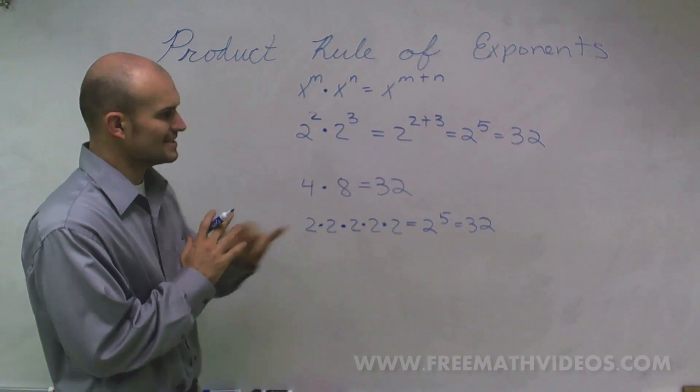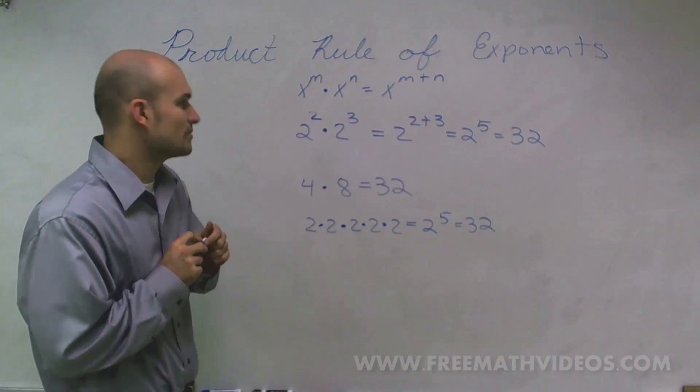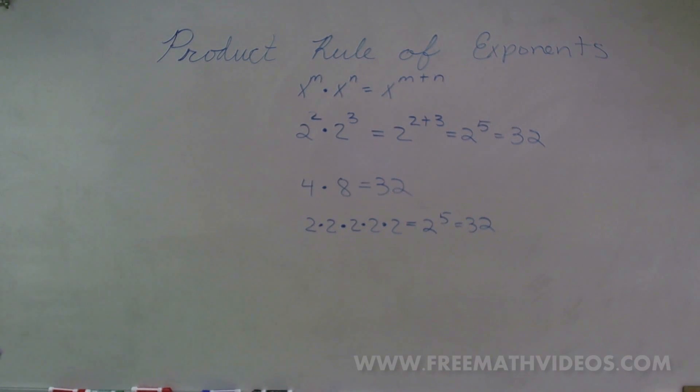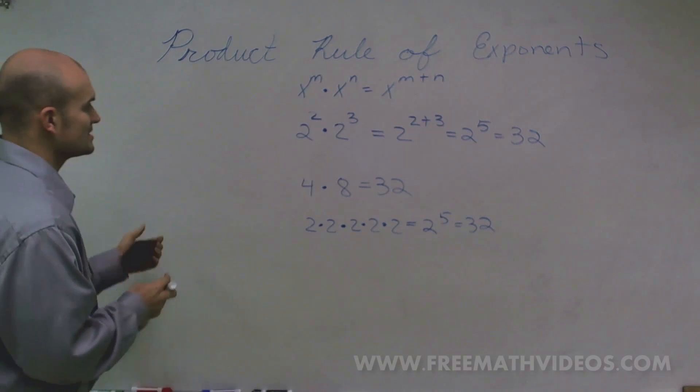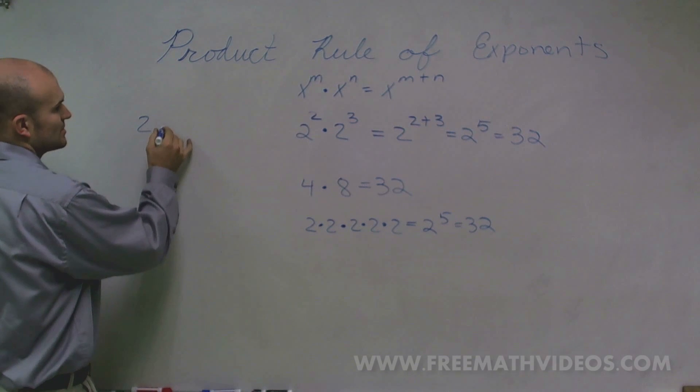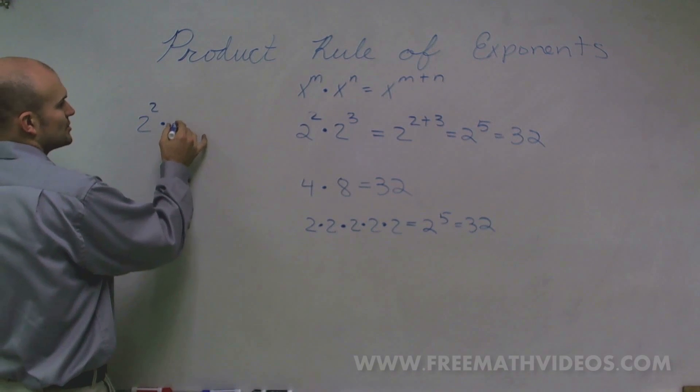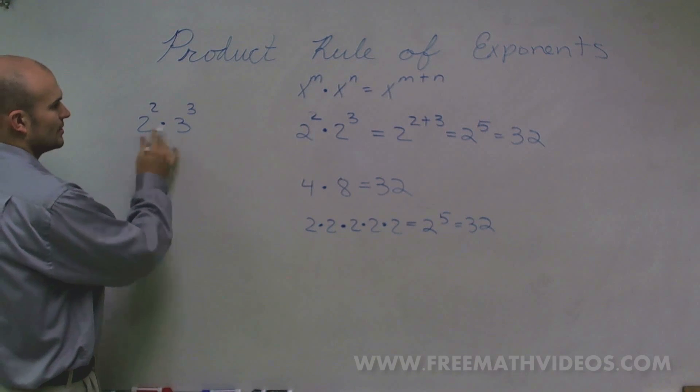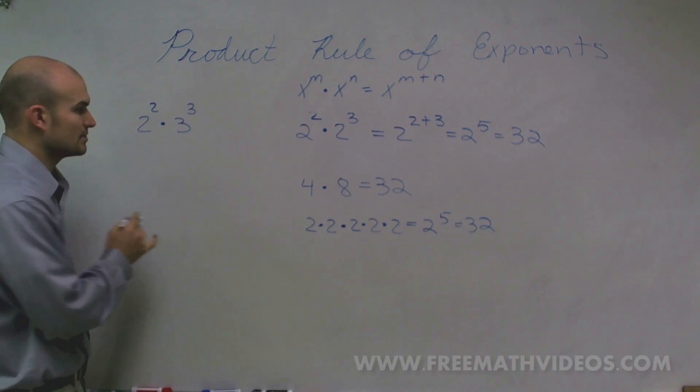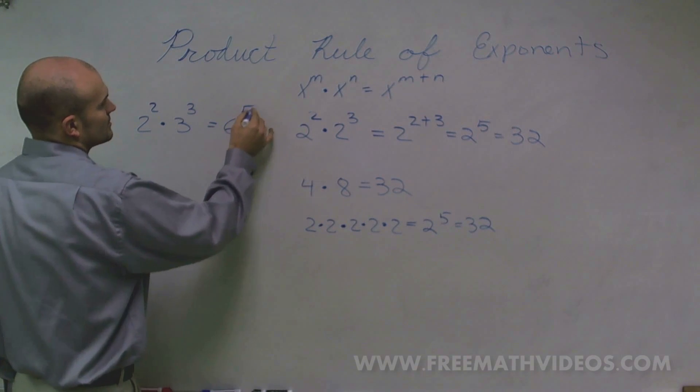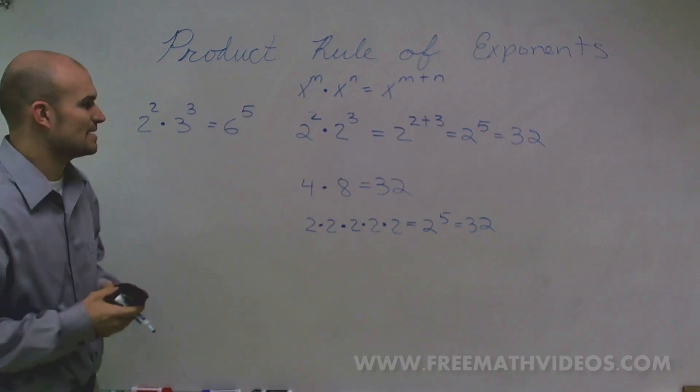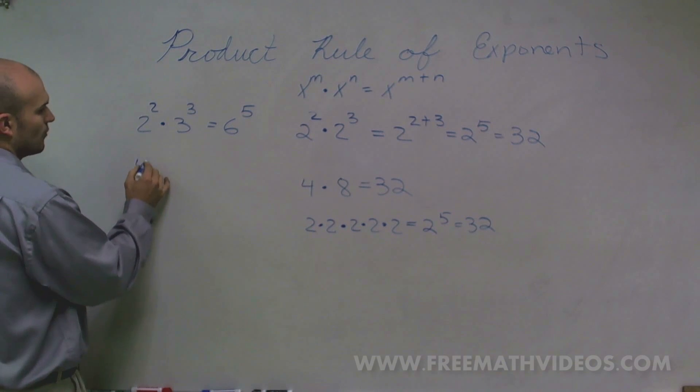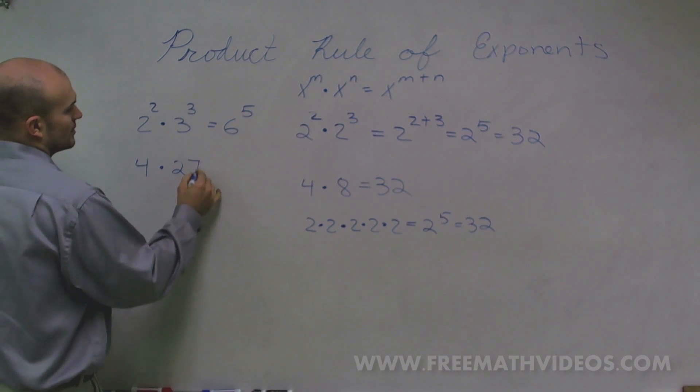Now let's look at a couple misconceptions before I even get started with the other things. A lot of students want to take a look at this and say, well, what about if x and y are not the same? So they say 2 squared times 3 cubed, and they want to multiply these numbers and say that's equal to 6 to the 5th. Well, I don't know what 6 to the 5th power is off the top of my head, but obviously let's look at what this is.